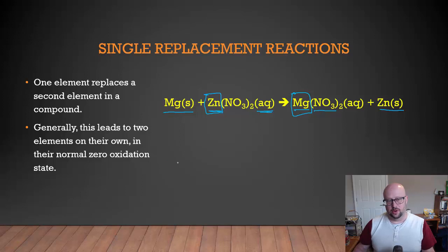What this is always going to lead to is that we started with one metal in its zero oxidation state, sort of its normal natural form, and we're going to end with the other metal in its solid zero oxidation state. We'll talk a little bit about that as we get to the end of the video.